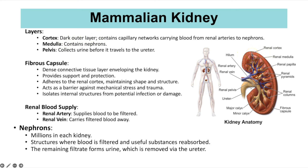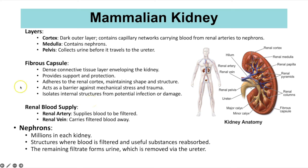The medulla contains the nephrons, and the pelvis collects urine before it travels to the ureter. There is also a fibrous capsule — a dense connective tissue layer enveloping the kidney — that provides support and protection, adheres to the renal cortex, and maintains the kidney's shape and structure. It also acts as a barrier against mechanical stress, trauma, and potential infection.